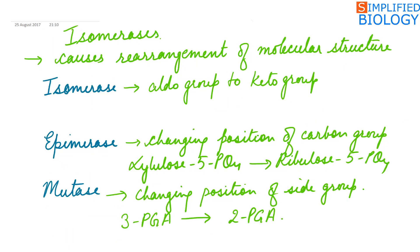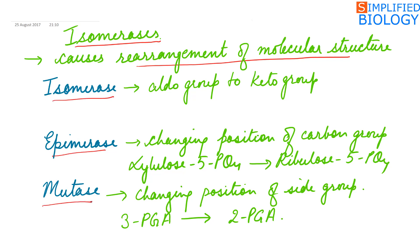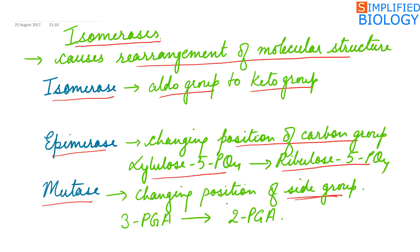Next, Isomerases. They cause rearrangement of molecular structure and are of three types: isomerase, epimerase, and mutase. In isomerase, for example, an aldo group is converted into a keto group, such as glucose being converted into fructose. In epimerase, the position of a carbon group is changed — for example, xylulose-5-phosphate is converted into ribulose-5-phosphate. In mutase, the position of a side group is changed — like in glycolysis, where 3-phosphoglyceric acid is converted into 2-phosphoglyceric acid.